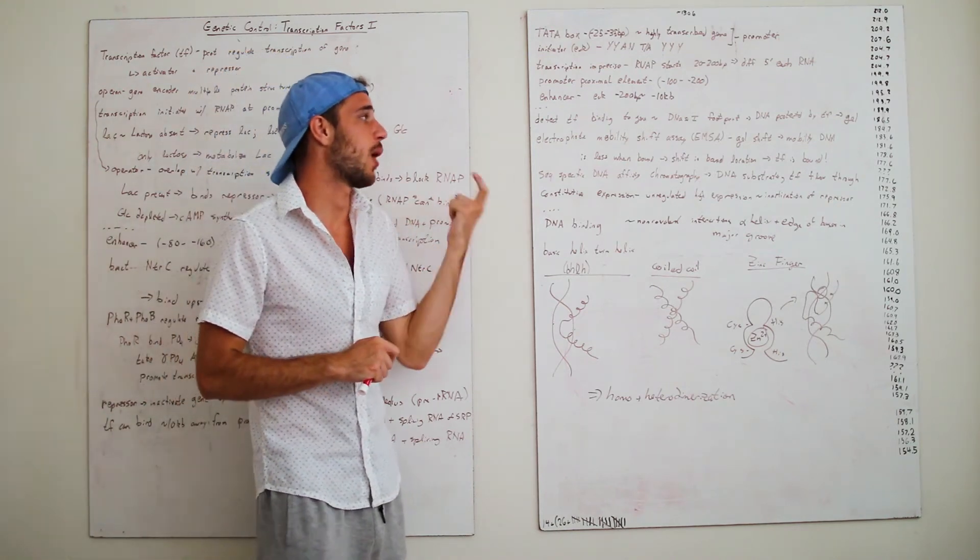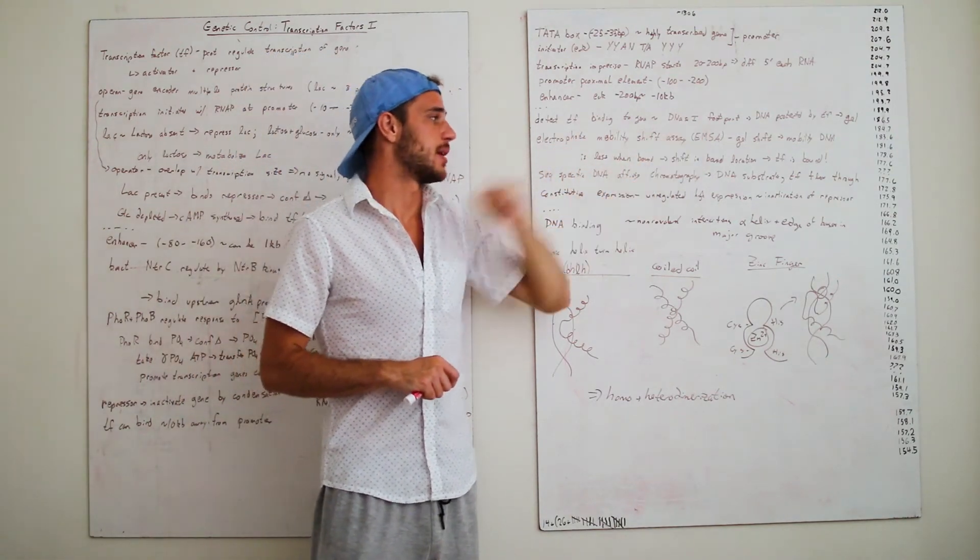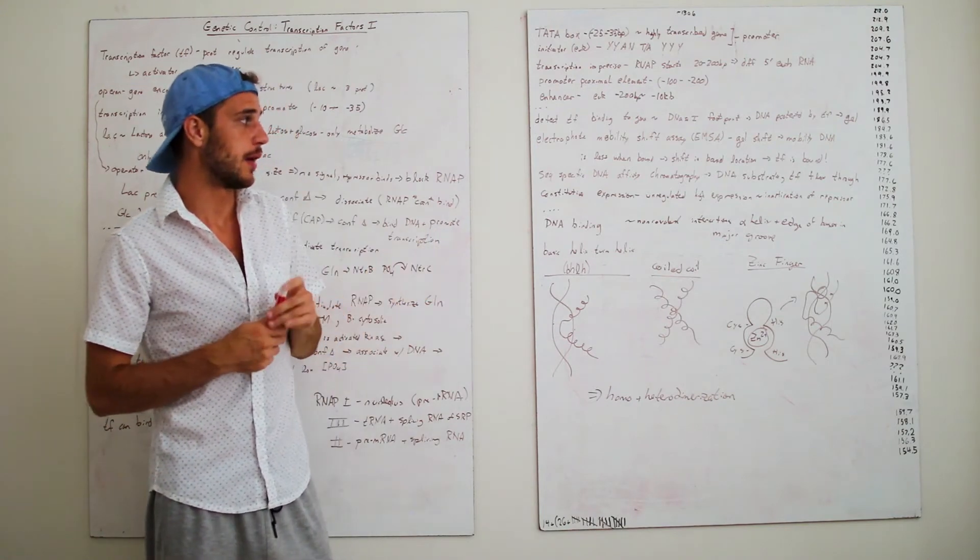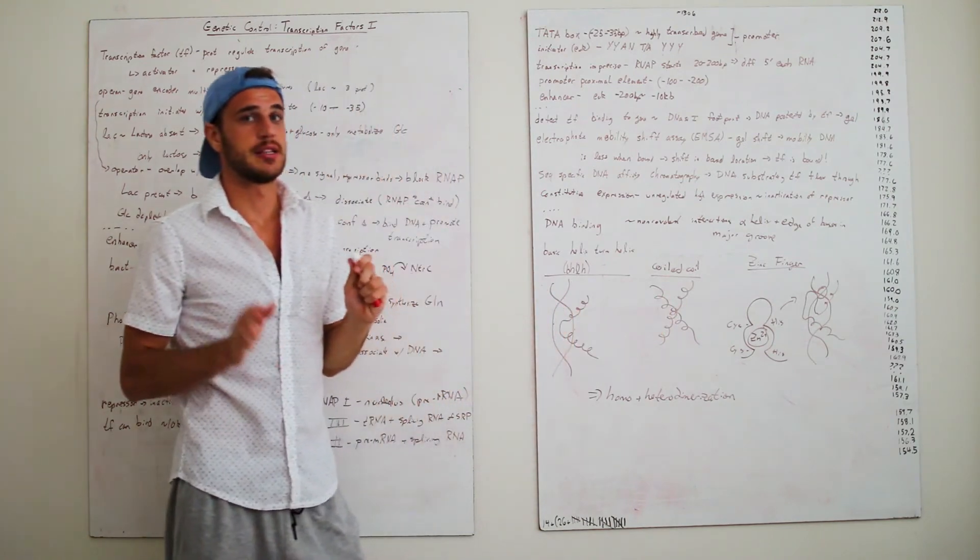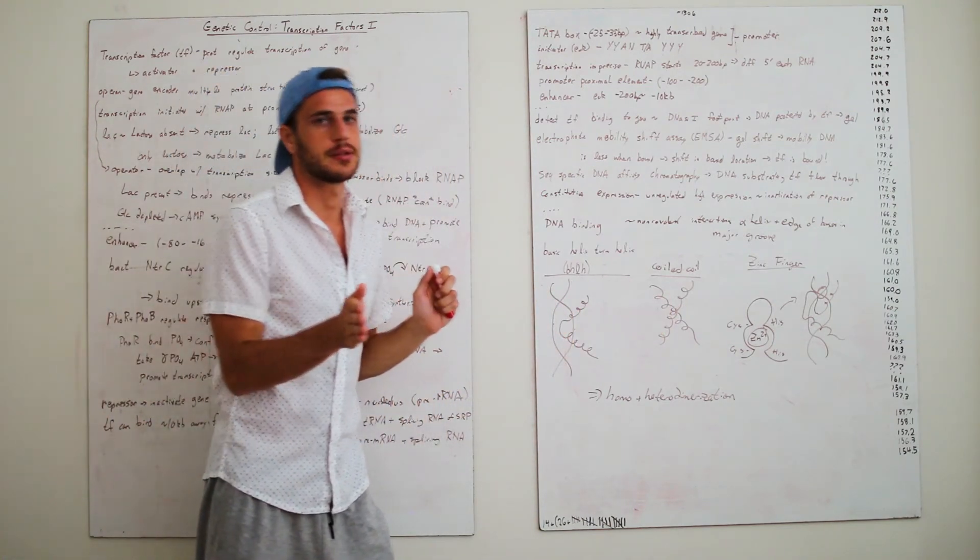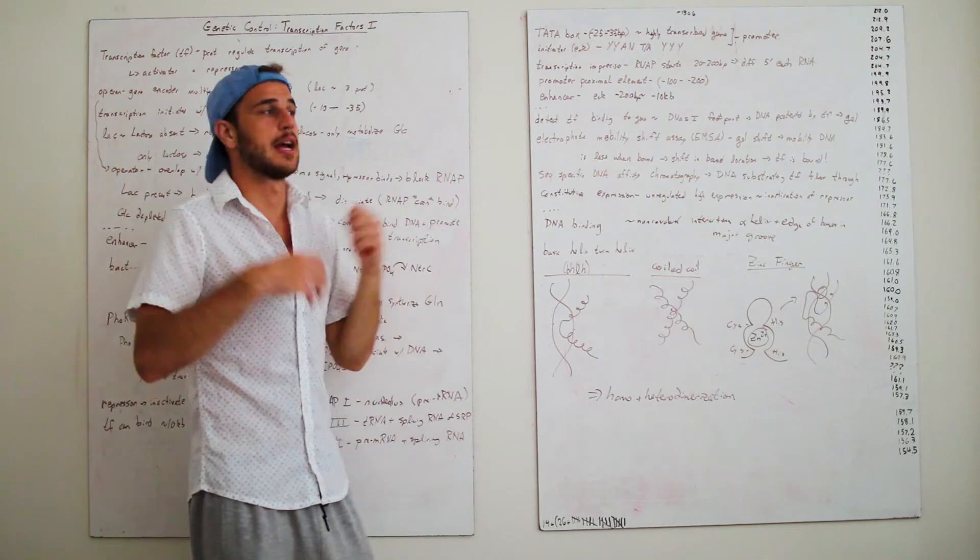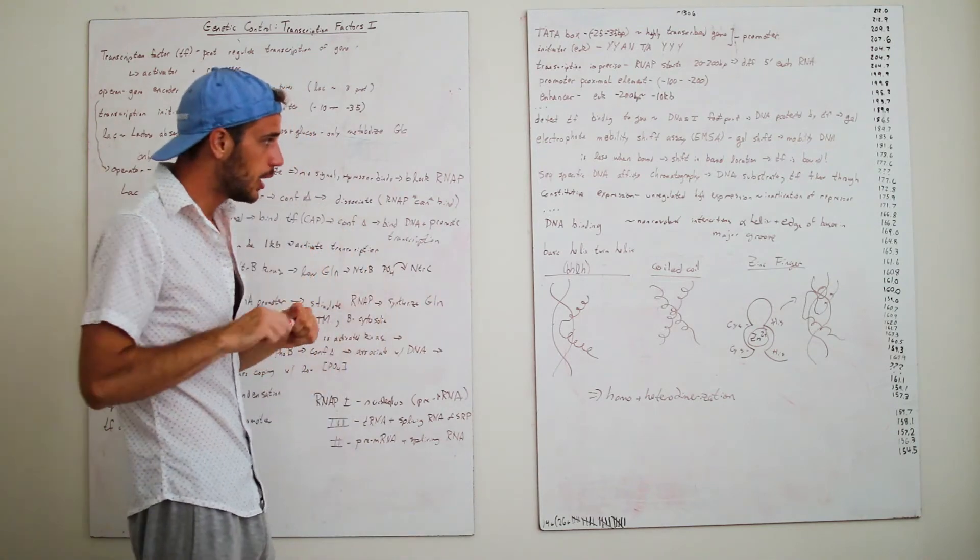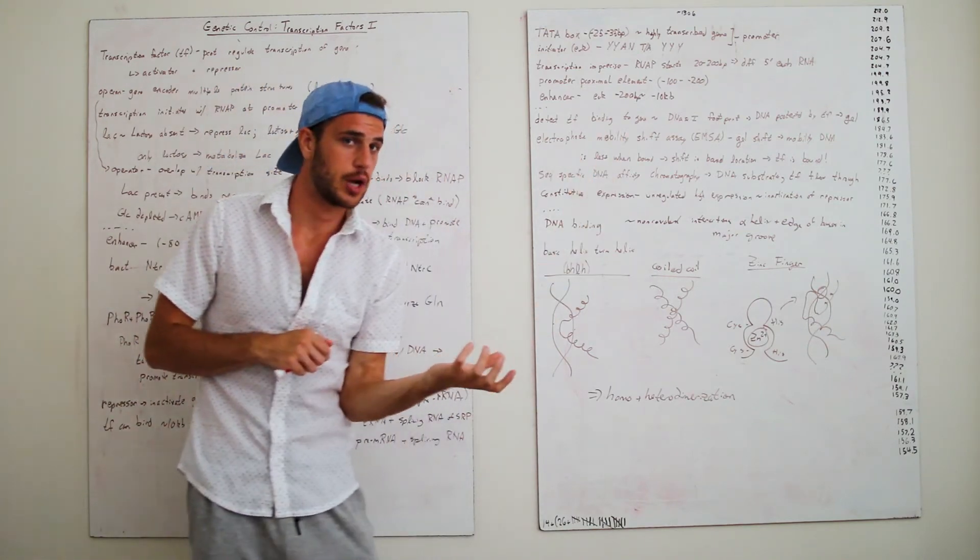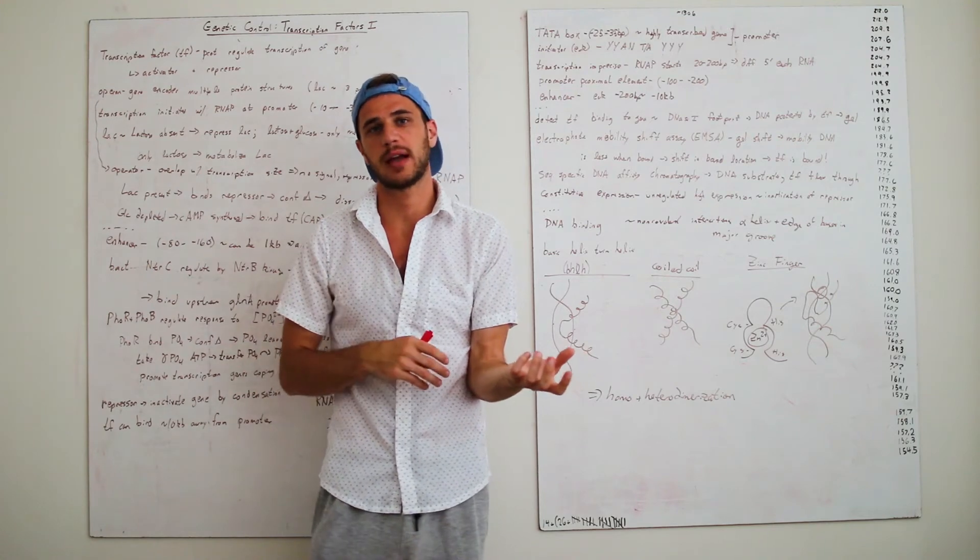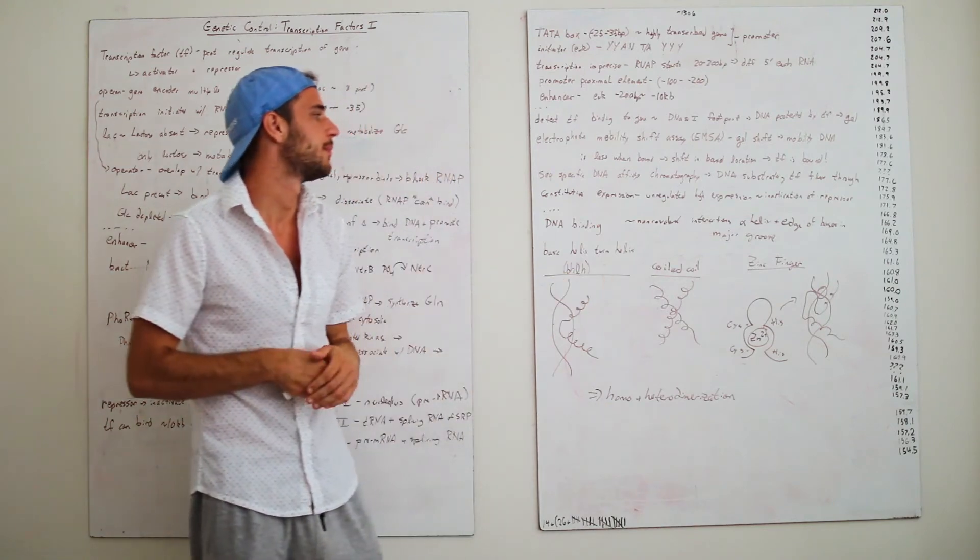You also have something that's quite similar, which is the electrophoretic mobility shift assay, EMSA, which is essentially just a gel shift of the mobility of DNA. So essentially, when DNA is less bound, it will move further down the gel. When it is more bound by the transcription factors, it will move less. So, you can see that, you can see a shift in the band location, which means that the transcription factor has bound. In addition, you can also do sequence-specific DNA chromatography. You have DNA substrate, and then you have just flow through some transcription factors with that specific DNA, and you can see that transcription factor binds to the DNA. Neat stuff.